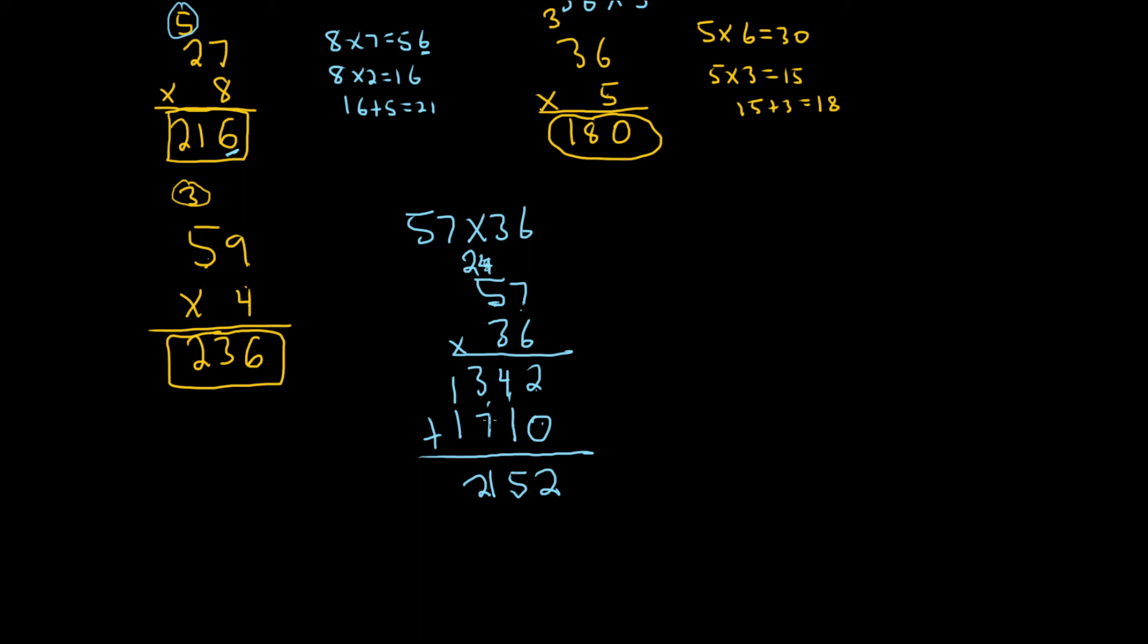I did. 3 plus 7 is 10. Carry the 1. Yeah, we're good. Okay, 2 plus 0 is 2, 4 plus 1 is 5, 3 plus 7 is 10. So you put the 0 there, carry the 1, 1 plus 1 is 2. Good save.